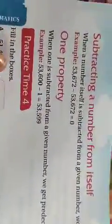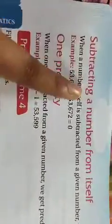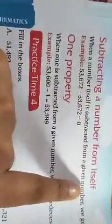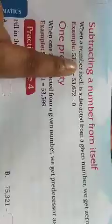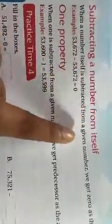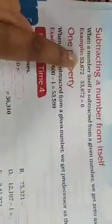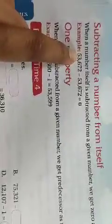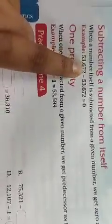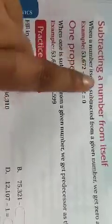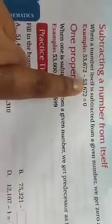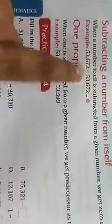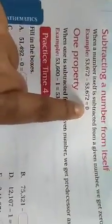Now let's learn the second property of subtraction: subtracting a number from itself. When a number itself is subtracted from a given number, we get zero as the answer. For example, 53,672 minus 53,672 equals zero.